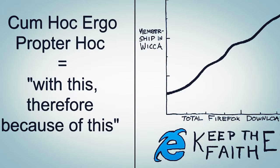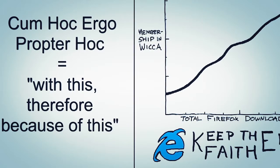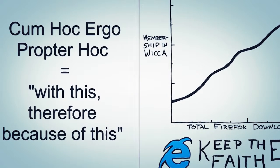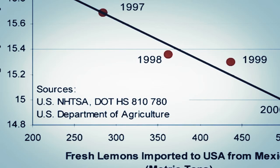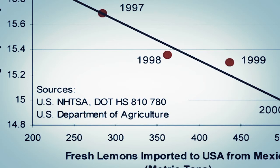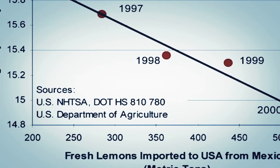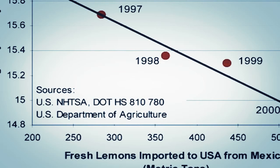Just because two factors are linked in some way — for example, occurring one after the other, or in the same population — does not necessarily mean one causes the other. In the case of our example, lemon imports have been increasing, probably due to economic factors, and highway fatality rates have been going down, probably due to technological improvements in the same time period. So we have correlation, but not causation.